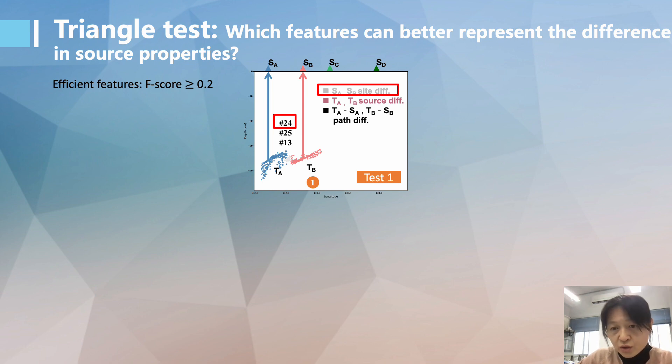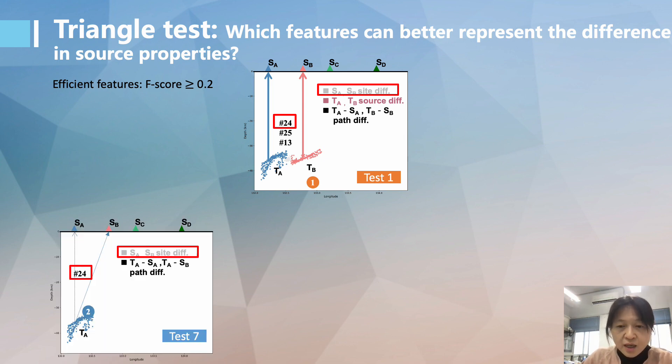To discriminate the tremors from area A and area B in this diagram, the efficient features are determined as number 24, 25, and 13. And to discriminate the signals of tremors recorded at station A from station B, the efficient features are determined as number 24.